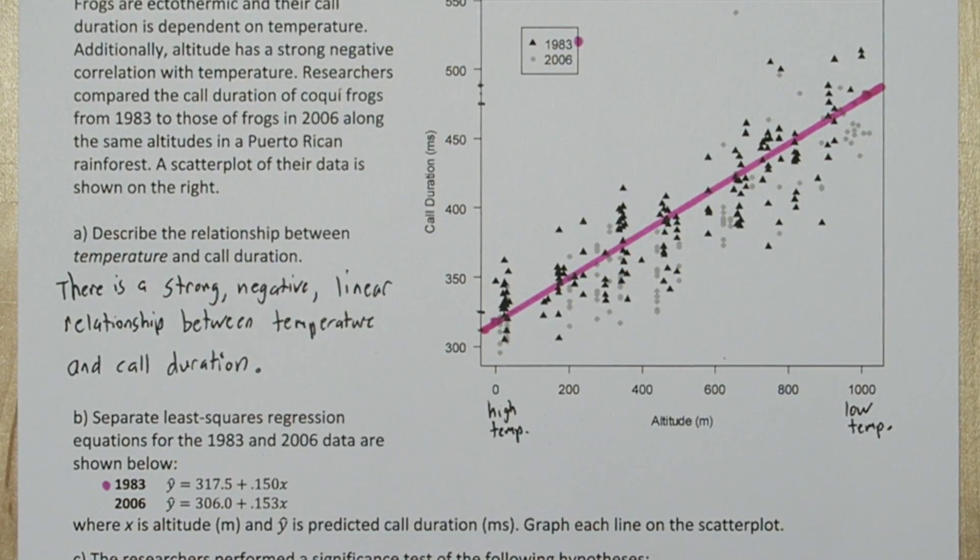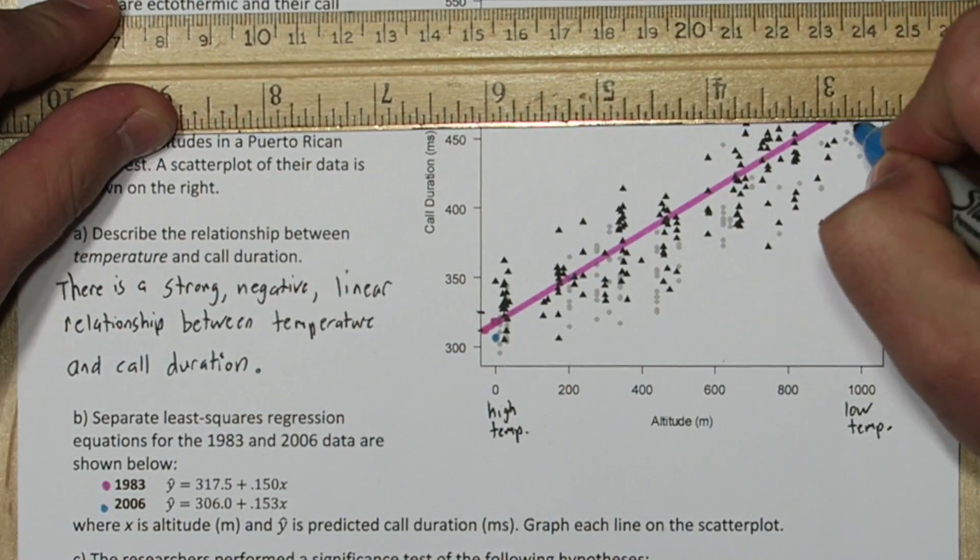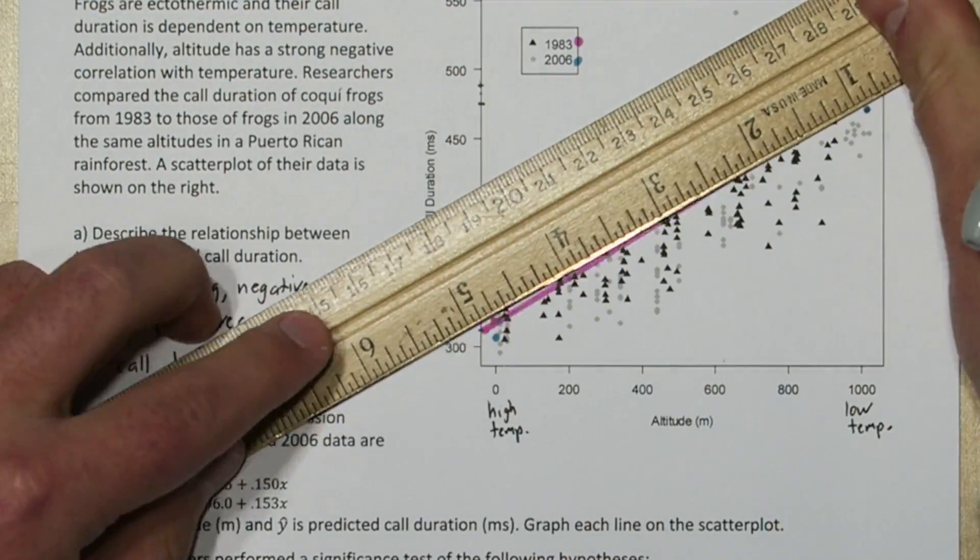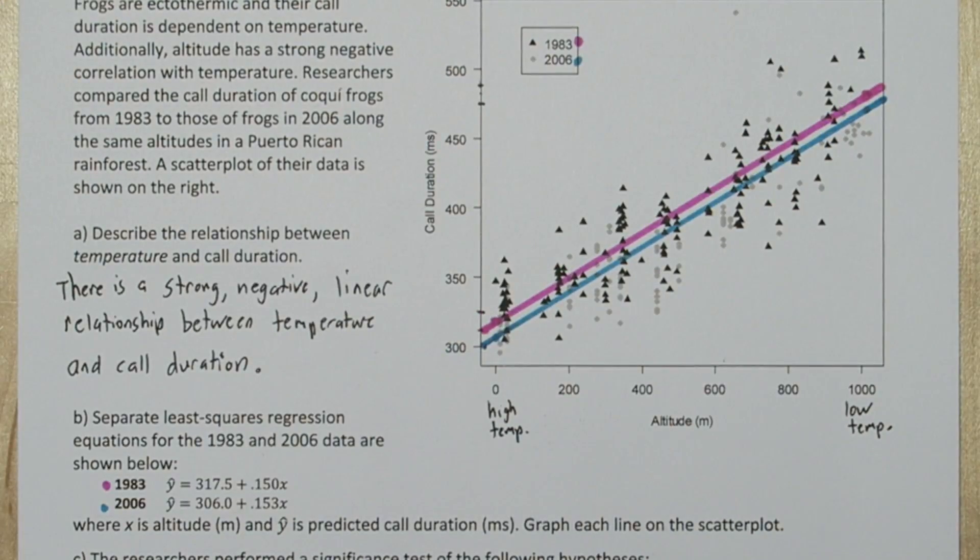And if you look at all the triangles, it does seem like that line fits pretty well. Let's do the same thing for 2006. So there's our least squares regression line for 2006. It looks like the lines are pretty close to parallel, and if we look at the slopes, they are pretty close to parallel.